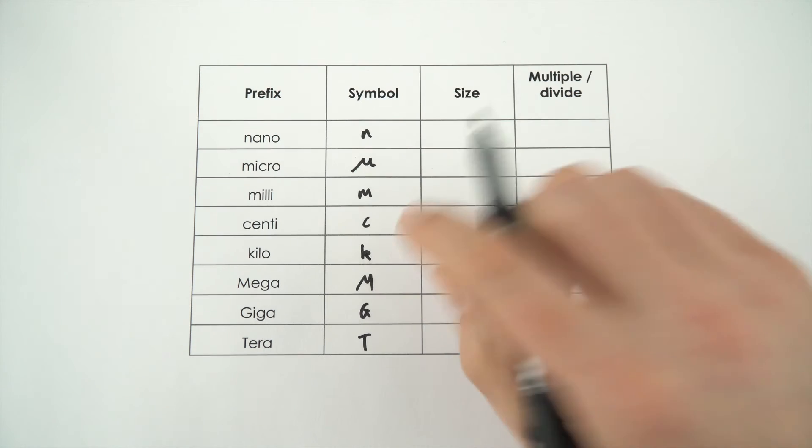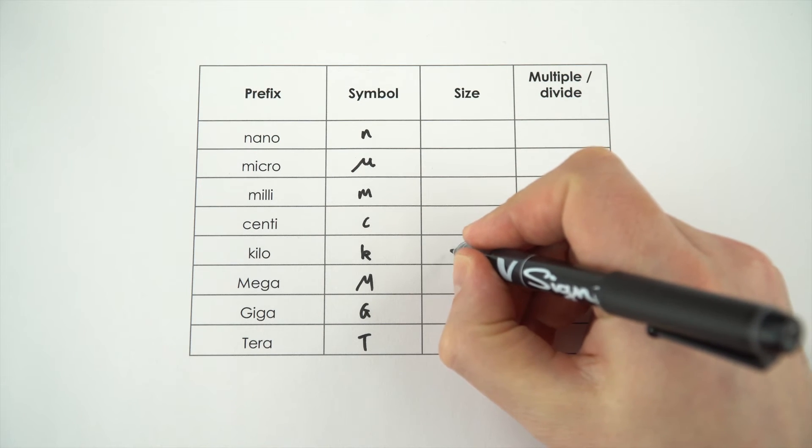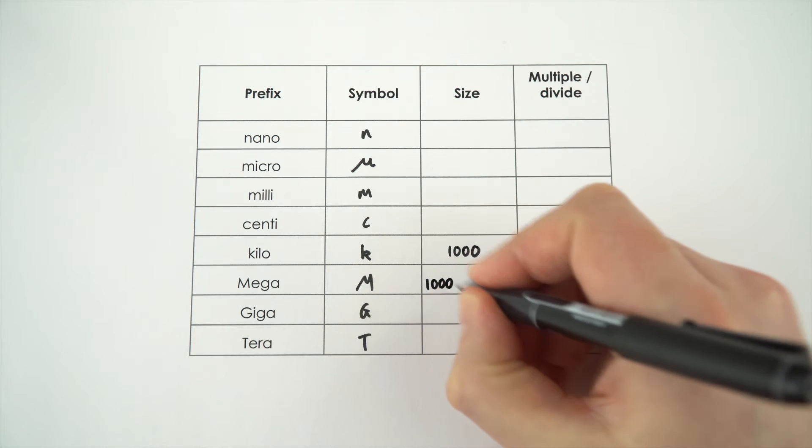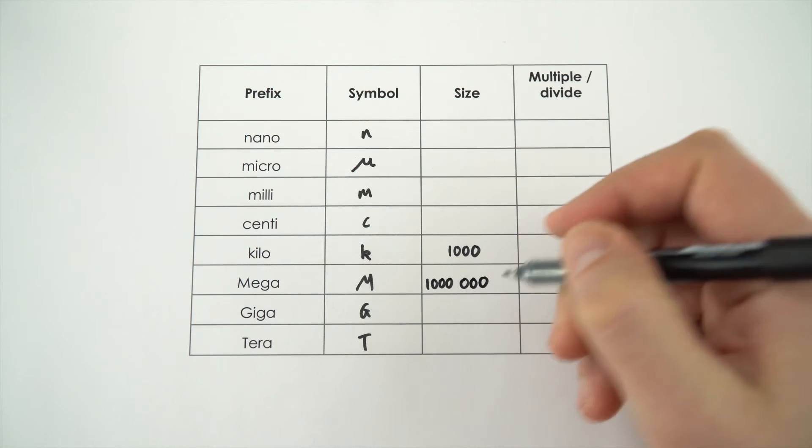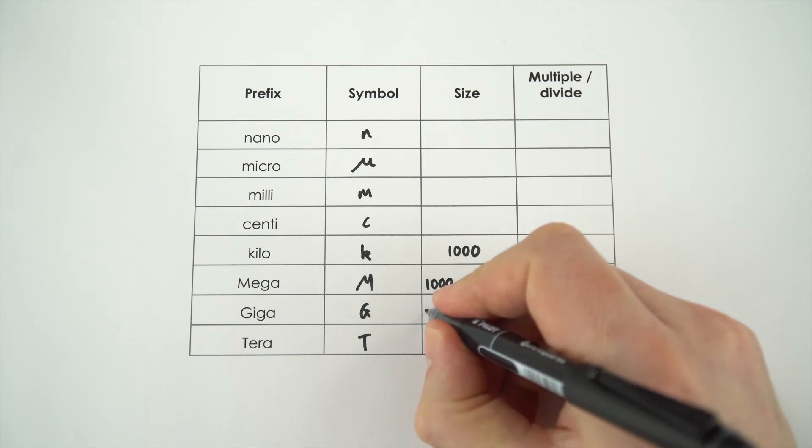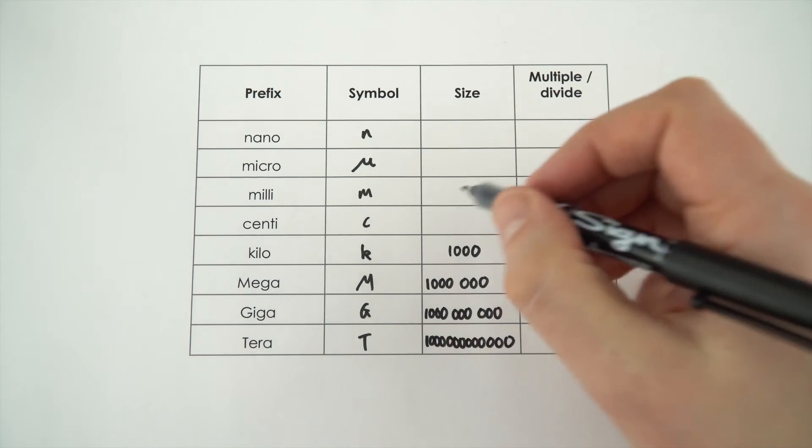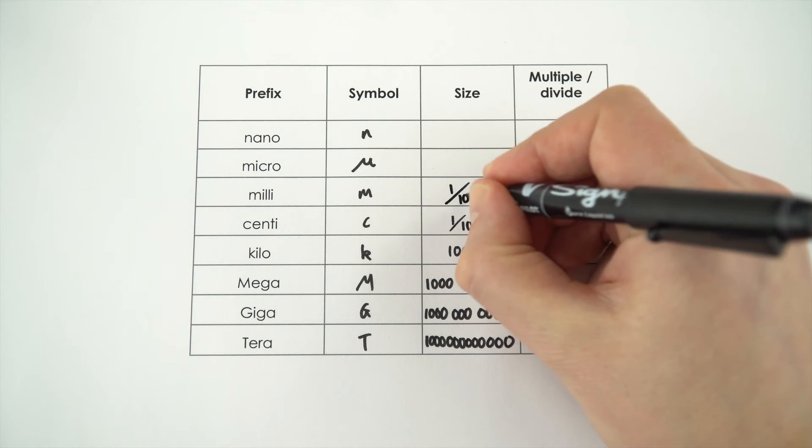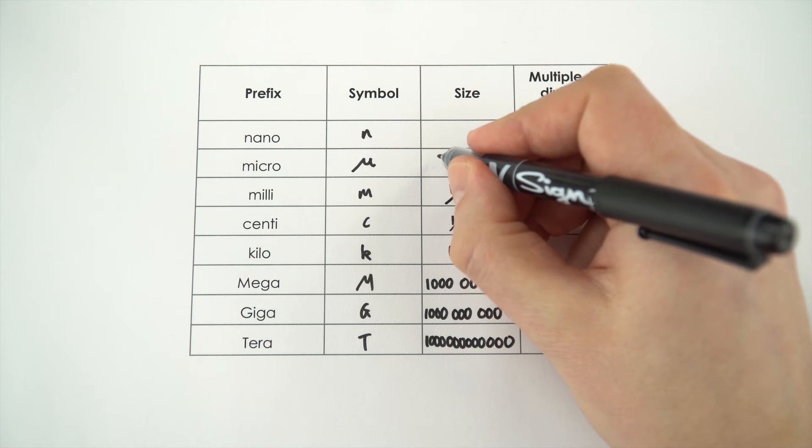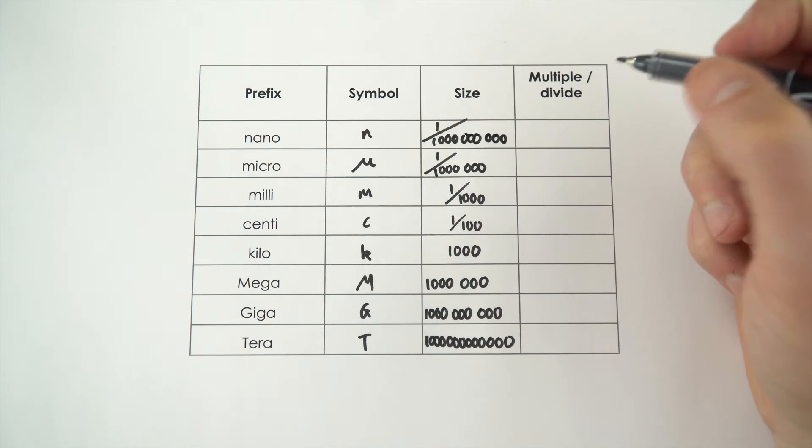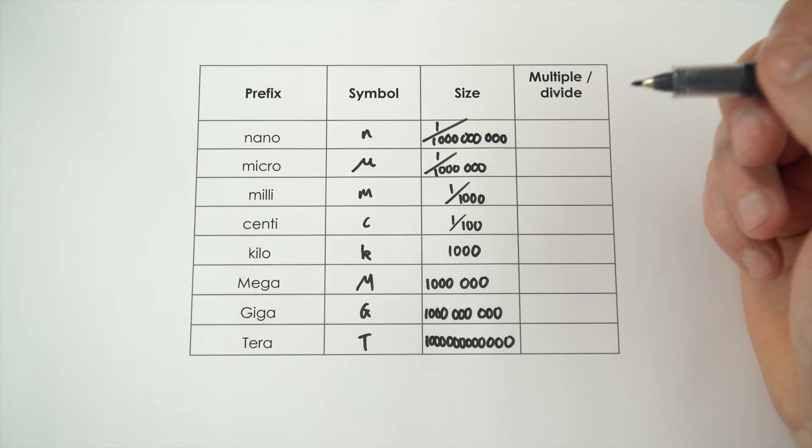Now in terms of the size, a kilo means that something is a thousand times bigger, a mega is actually a thousand thousand, so a million times bigger, and then these all just get bigger by a thousand each time. And if we go the other way, a centi means a hundredth, a milli is a thousandth, and then a micro is a thousandth thousandth, so that's one millionth, and a nano is even smaller than that.